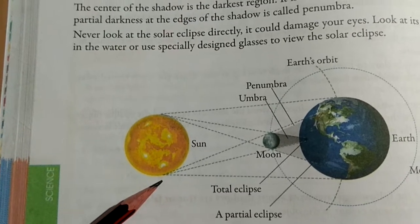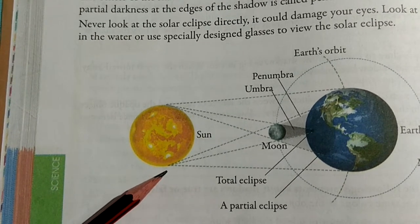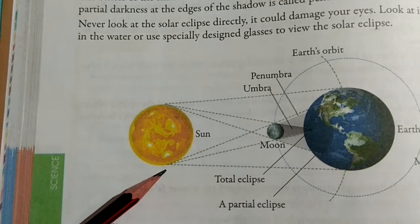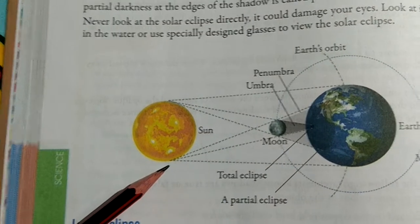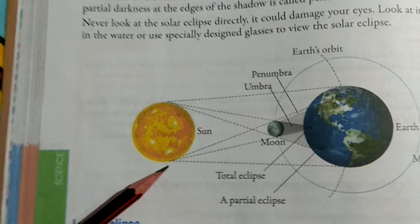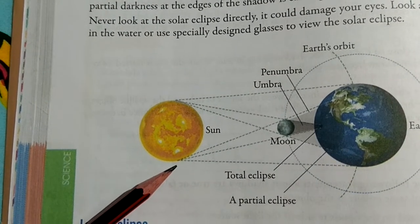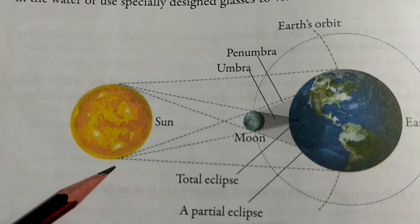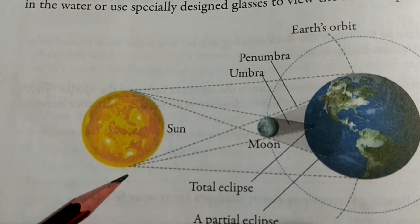Solar eclipse occurs when the moon comes in between the earth and the sun. When the sun, moon and earth are in a straight line, the moon blocks out the sunlight from reaching the earth and casts a shadow on the earth. As the sun gets hidden by the moon, it is called solar eclipse.